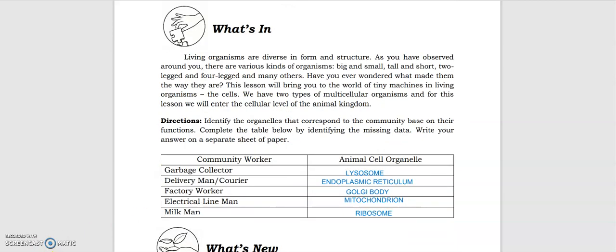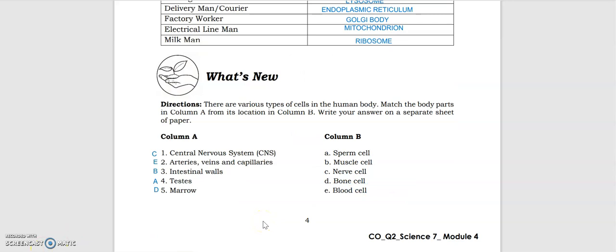For the What's In portion, we're going to compare the different organelles to community workers. First is the garbage collector, that's the lysosome. Delivery man or courier, we have endoplasmic reticulum. For the factory worker, we have the Golgi body. Electrical lineman, the mitochondria, and the milkman is the ribosome.